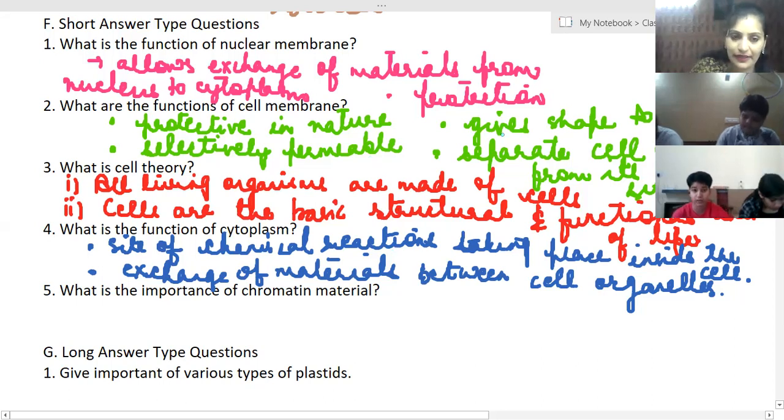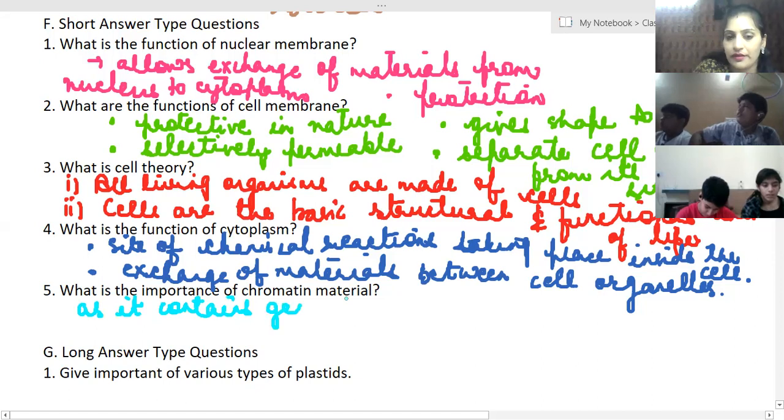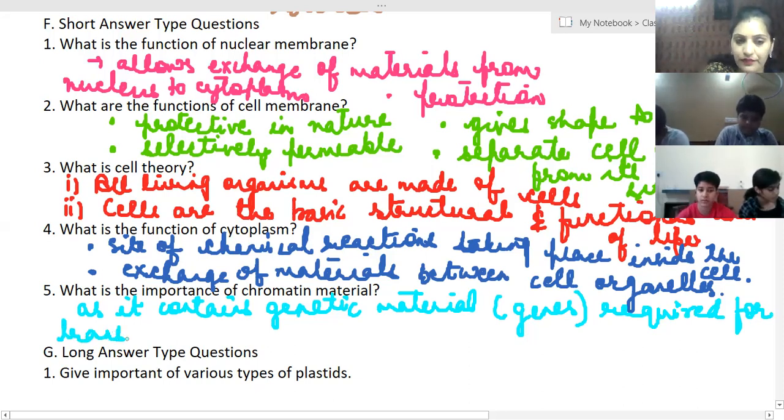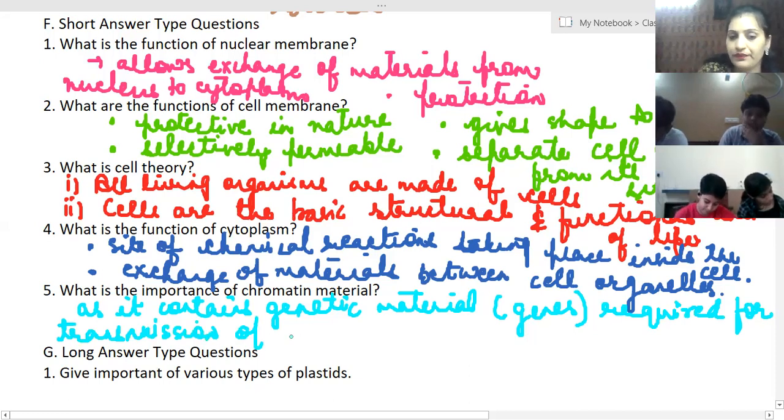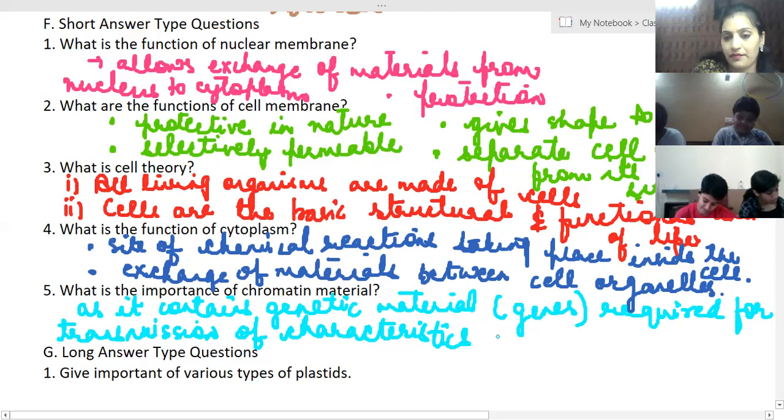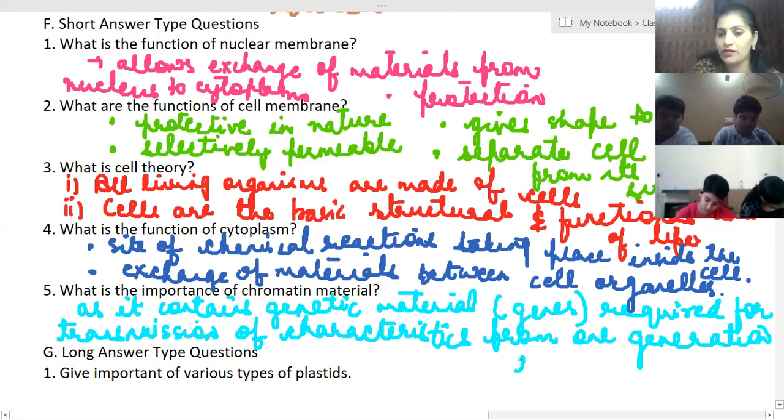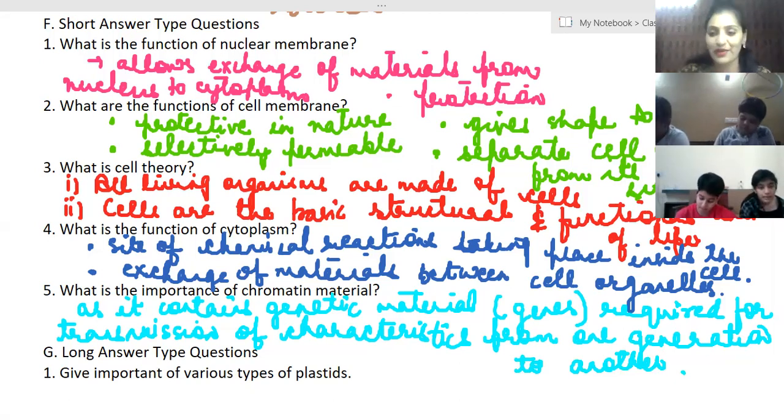The chromatin material is important as it contains genetic material, genes, required for transmission of characteristics from one generation to another. So this was the importance of chromatin material and with this we're going to finish off our short answer type questions.